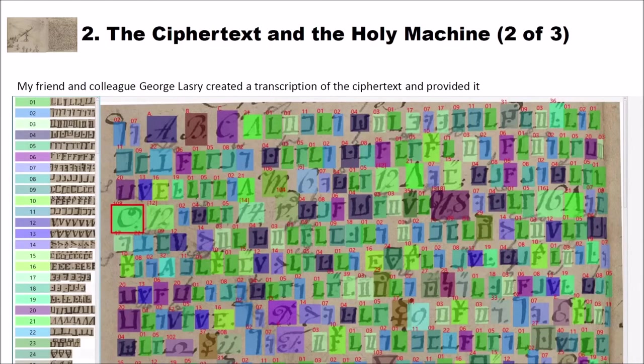And my good friend and colleague George Leslie created a nice transcription of this ciphertext and provided it to me. And here you can see that he assigned two digits to each of the ciphertext symbols. And you can see also that we have some Latin letters inside the ciphertext. And he also assigned Latin letters to that original Latin letters. And his tool created or he used his tool to create this nice transcription here. On the left side, you can see how he transcribed all the symbols beginning from 01 to 24 or 25. This list goes on a little. This is only one part of the transcribed original ciphertext.